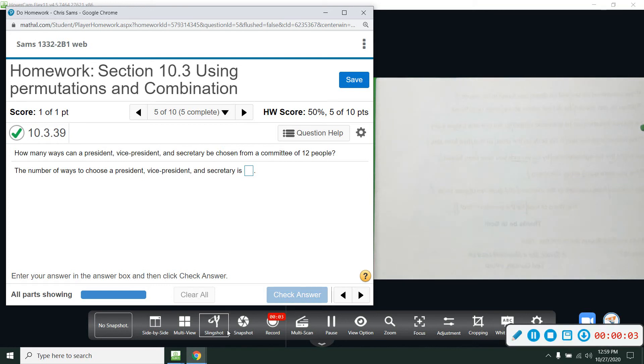All right, number five. We want to know how many ways can a president, vice president, and secretary be chosen from a committee of 12 people.